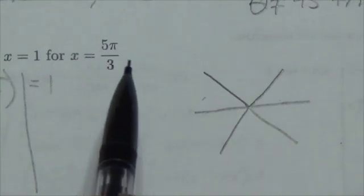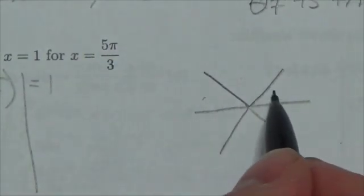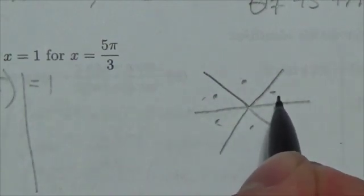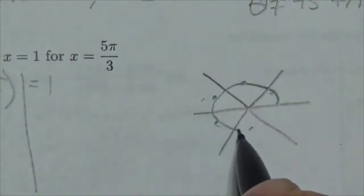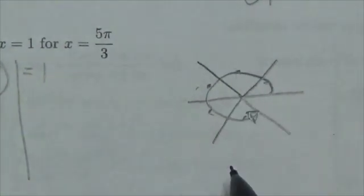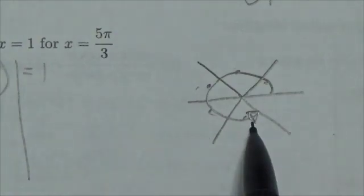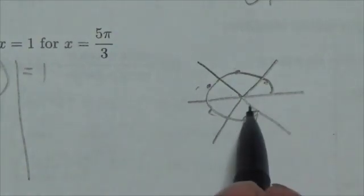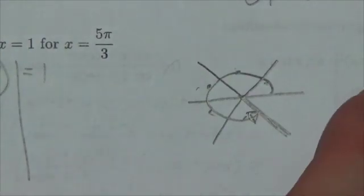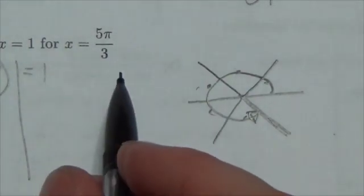And the angle that I'm giving here is 5π over 3, so that's 1, 2, 3, 4, 5. Remember, we start on the positive x-axis, we rotate around. I haven't drawn in the vertical axis because that gets a little bit confusing here, but this is what 5π over 3 looks like. That is definitely in the fourth quadrant, and my reference angle here is going to be π over 3.